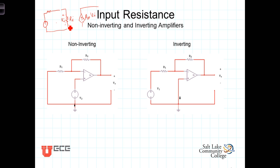So what we want to look at is what are the input resistances that these sources see in both the non-inverting and the inverting configuration. Well, our input resistance is just equal to the input voltage divided by the input current.